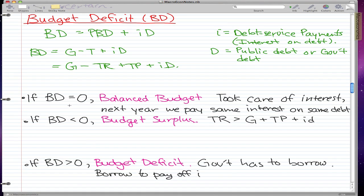The budget deficit can be equal to zero, less than zero, or greater than zero. When we calculate it and it comes up to zero, we have a balanced budget. This means we took care of the interest for this year, and next year we pay the same interest on the same debt.